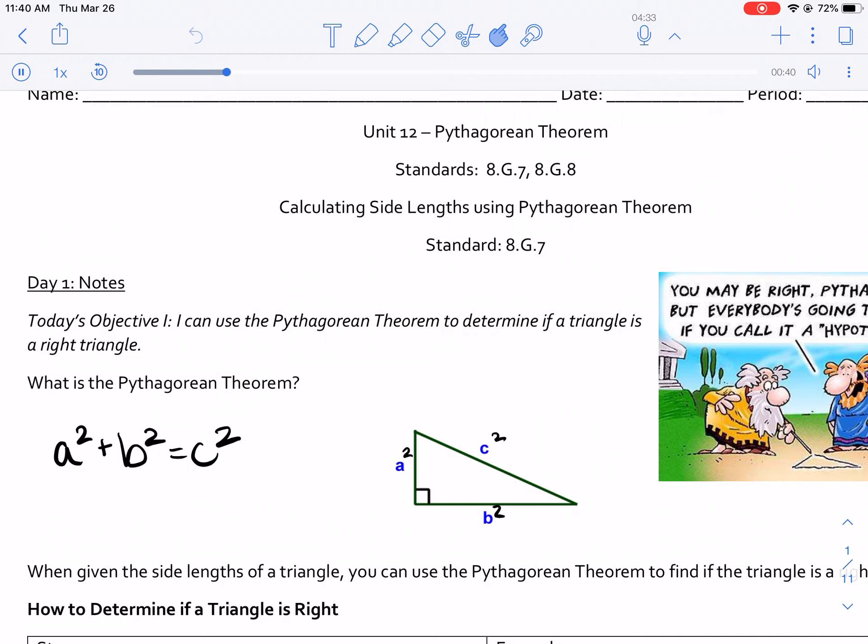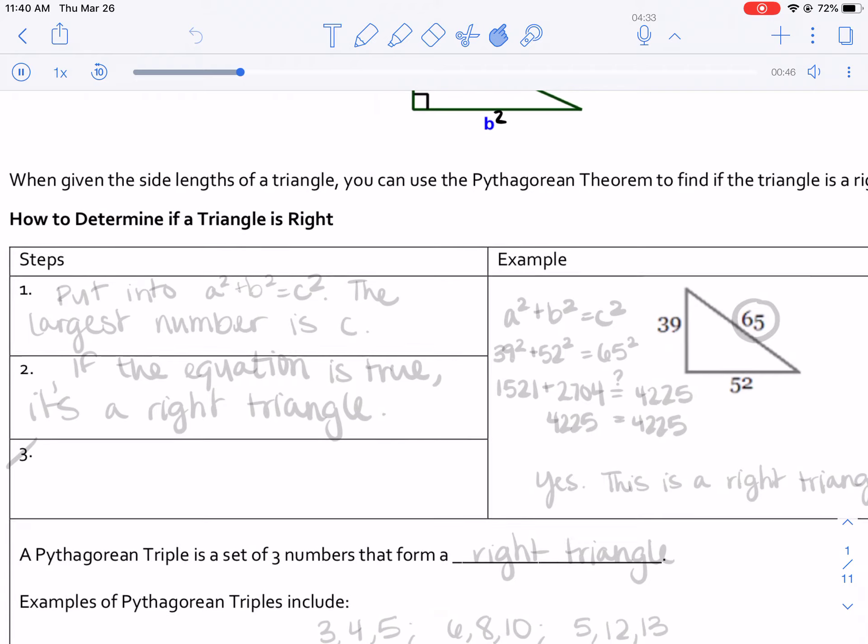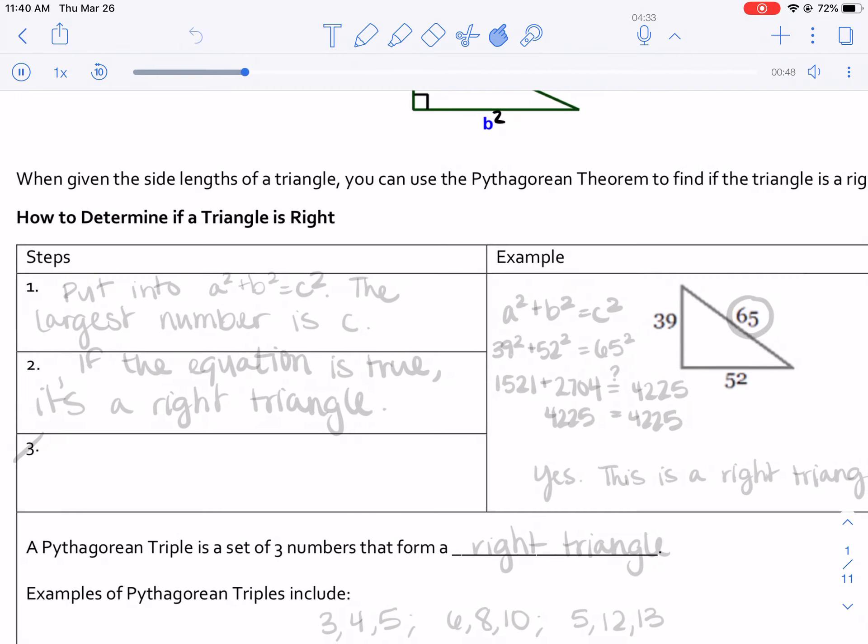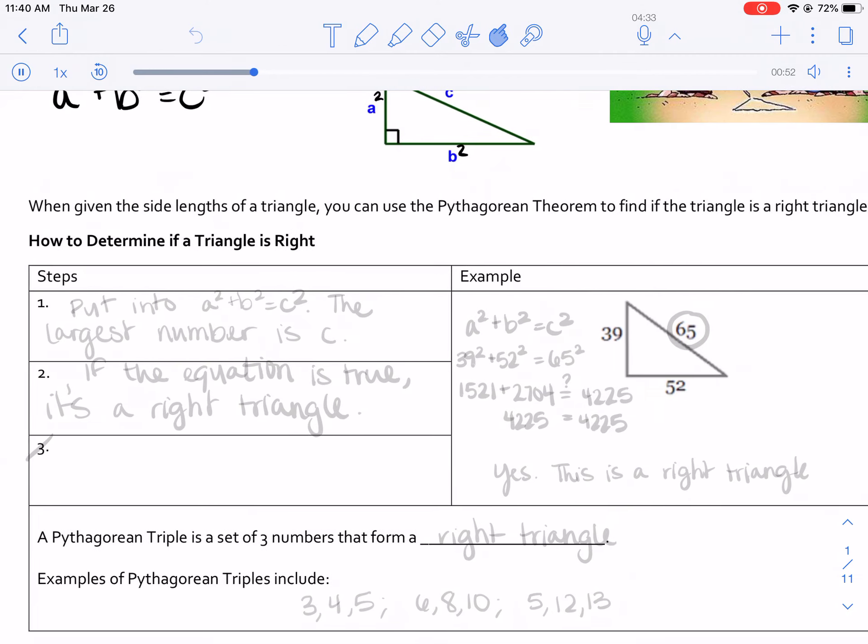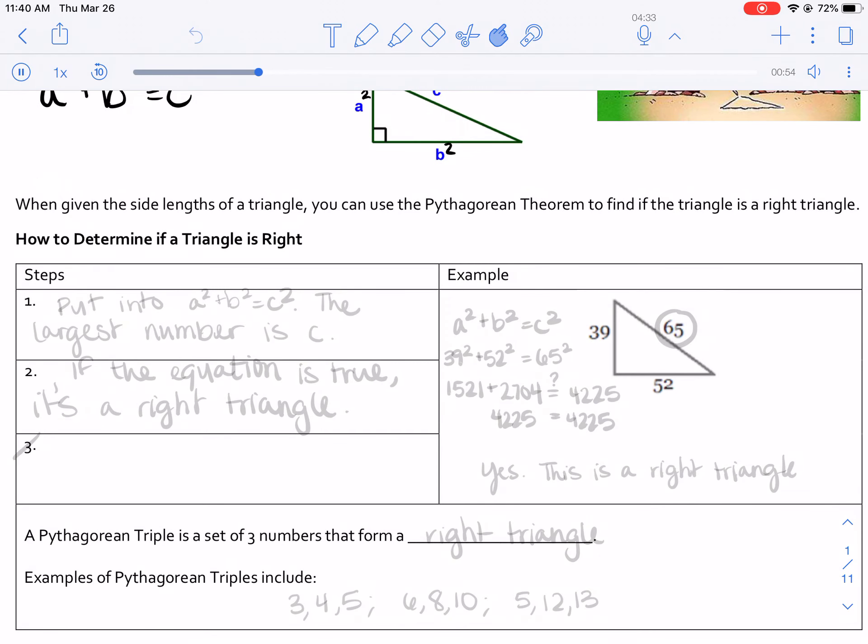We're going to go ahead and determine if this triangle given to us is a right triangle. Let's go through our steps. Now the Pythagorean Theorem is used to help us find the other side length of a right triangle. It actually goes the other way.